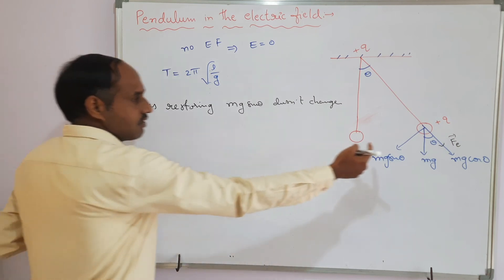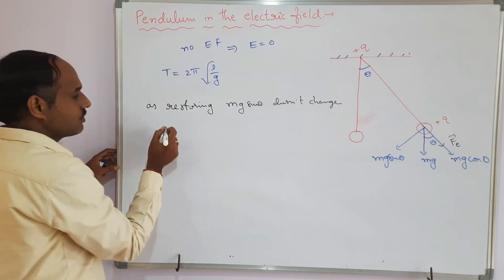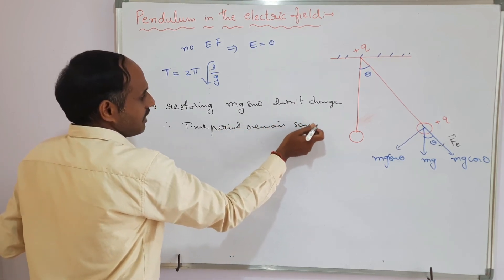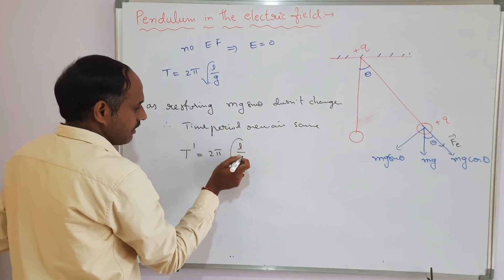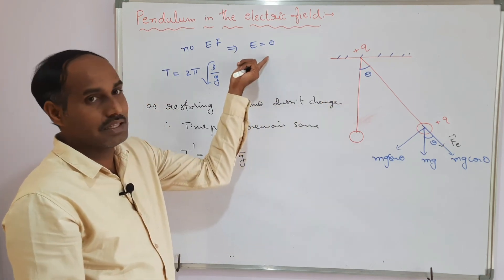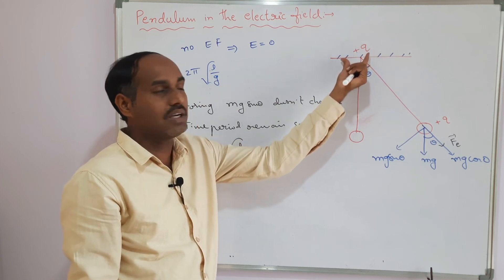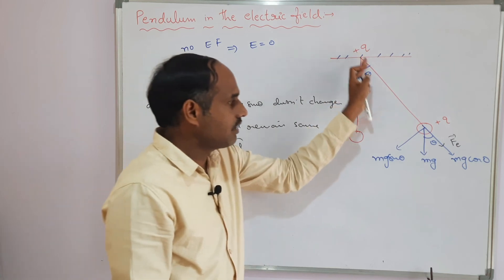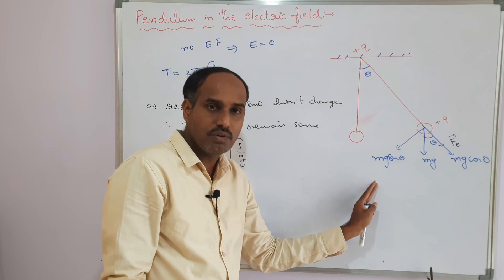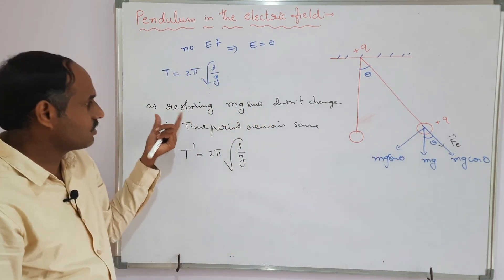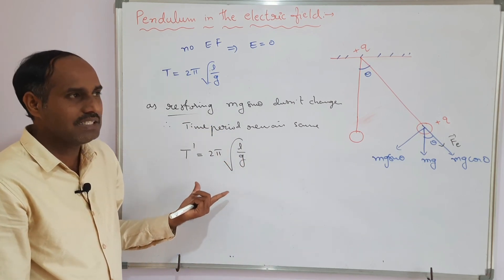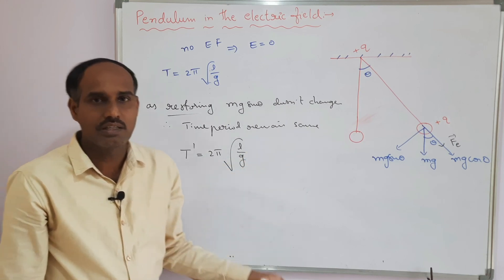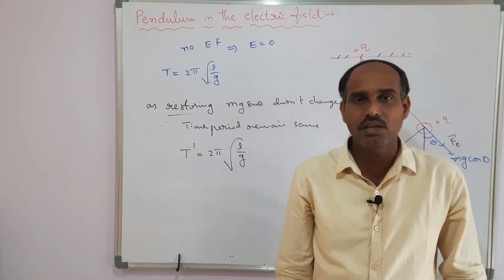Since the restoring force mg sinθ is unchanged, the time period remains the same: T' = 2π√(l/g). The electric force does not affect the restoring force, so the time period is unaffected. This is the fourth case of pendulum oscillations in an electric field by giving charge to the bob. Thank you for watching — if you like my videos, please like, share, comment, and subscribe to the channel to get more videos.